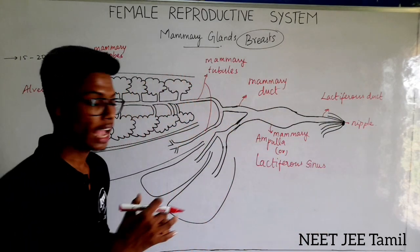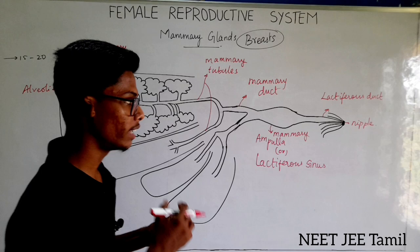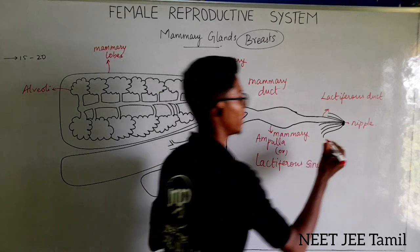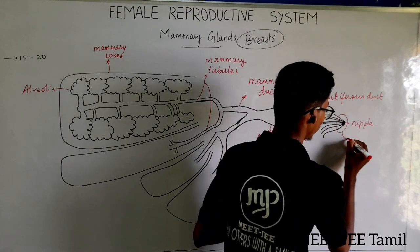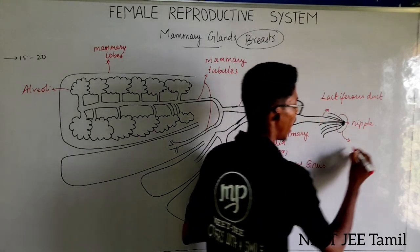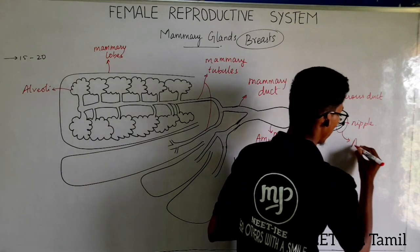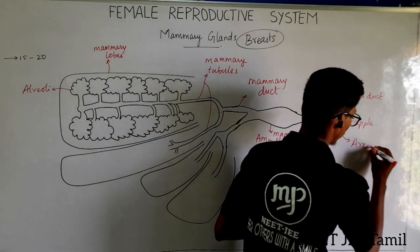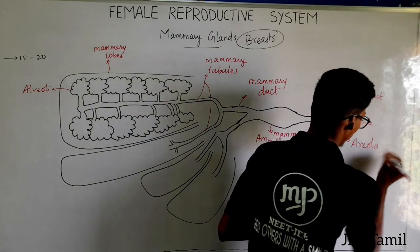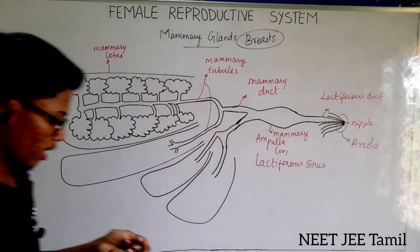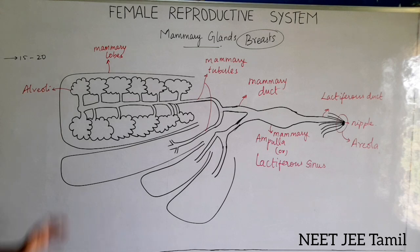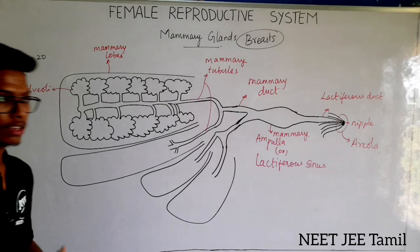The pigmented area surrounding the nipple is called the areola.